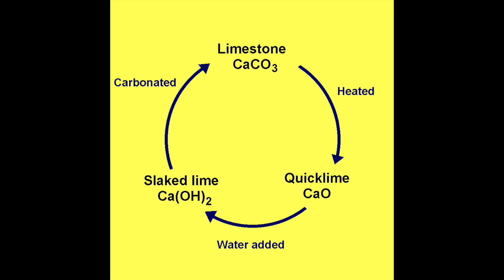If you add a little water to calcium oxide, also known as quicklime, it creates calcium hydroxide, also known as slaked lime. More water creates limewater, which can be used as a test for carbon dioxide — limewater turns cloudy. And if you add CO2 to limewater, it goes back to calcium carbonate and limestone.